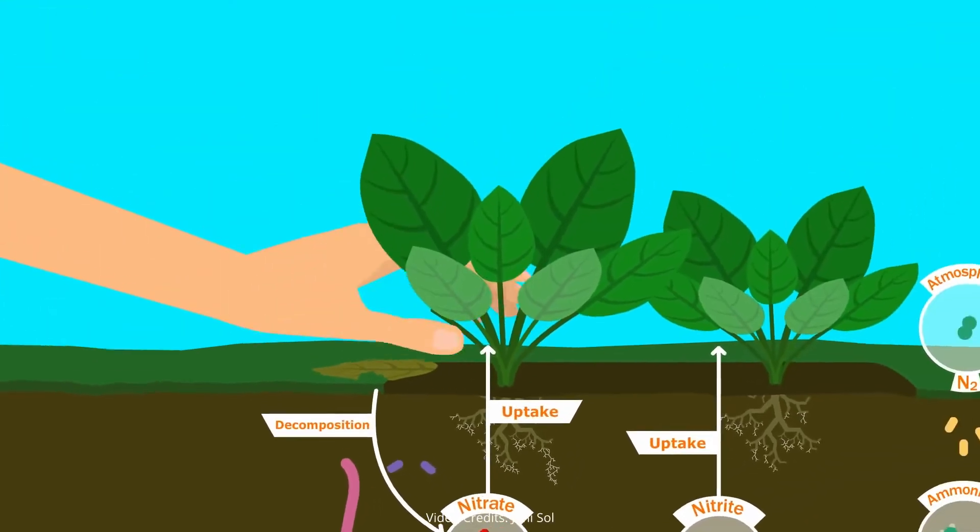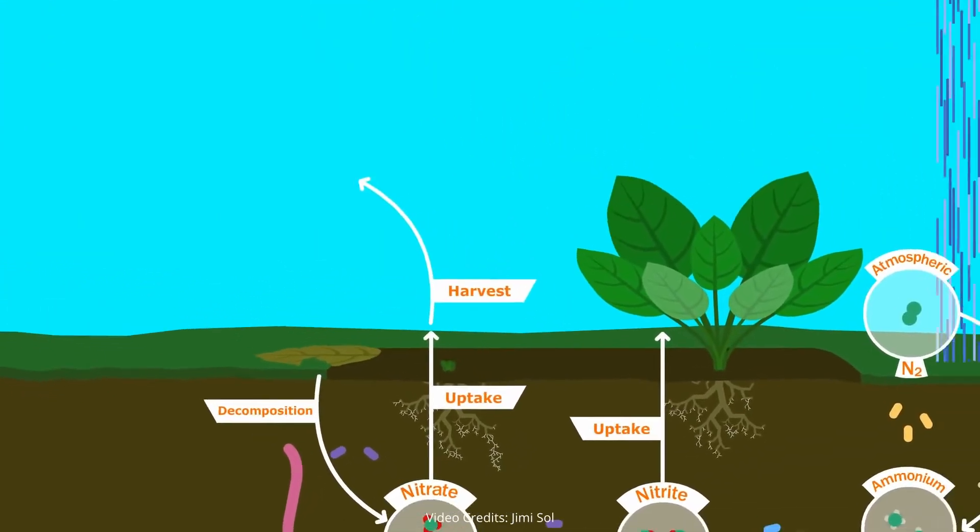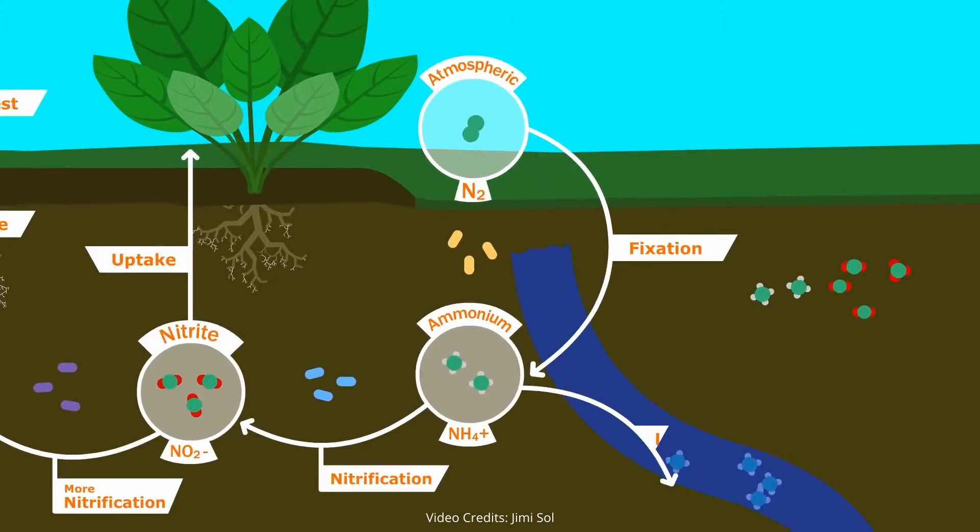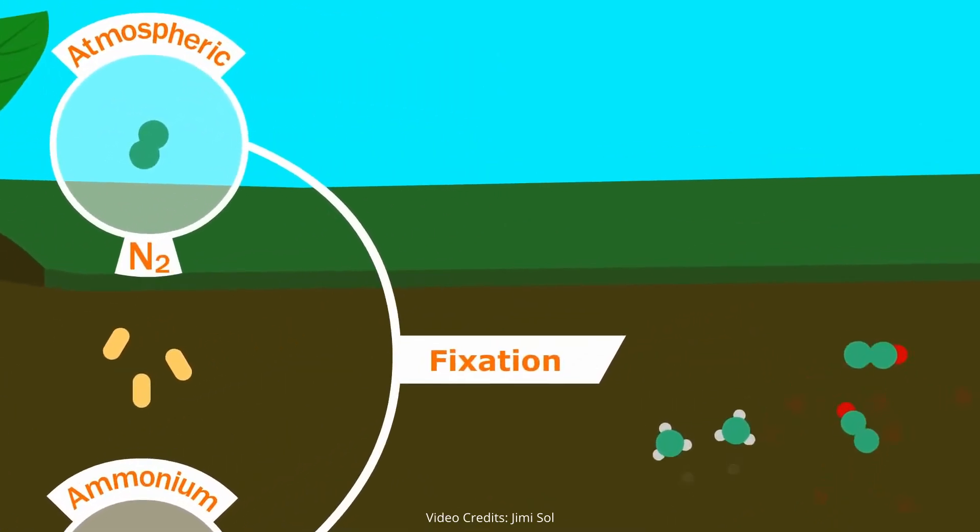Some of the ways nitrogen exits the soil is when the crop is harvested, when water carries it away, or when it becomes gaseous and returns to the atmosphere.